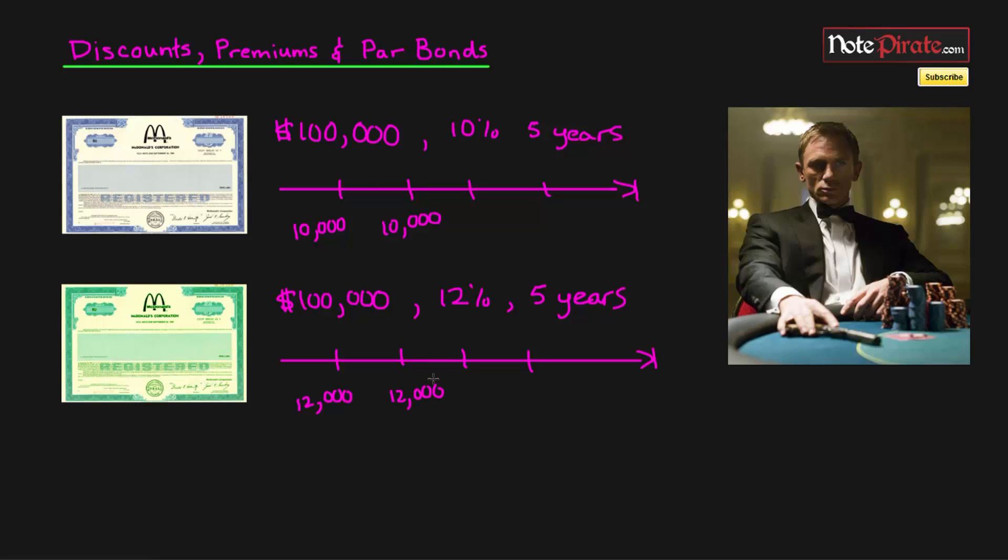Now the question is, who's going to want to purchase this bond, the $10,000 a year interest bond? Surely James Bond is going to want to purchase the latter bond, which gives you $12,000 of interest a year. This bond is no longer attractive to investors because they're receiving less of a return than the 12% market rate that you're getting from the second bond. Therefore, there has to be an incentive to purchase this first bond because they need to sell it.